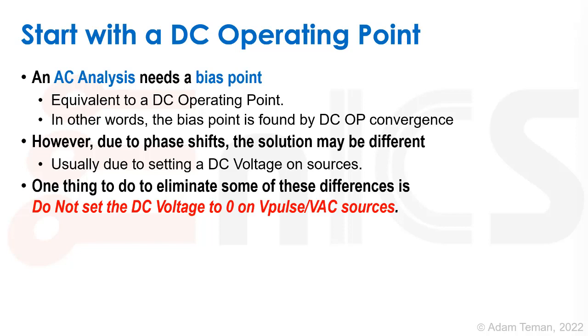We're going to find a bias point by the DC op convergence. There can be differences in the DC op point found due to phase shifts, usually due to setting a DC voltage on sources. To eliminate this, one thing you should do is not set the DC voltage to zero on V-pulse and V-AC sources.